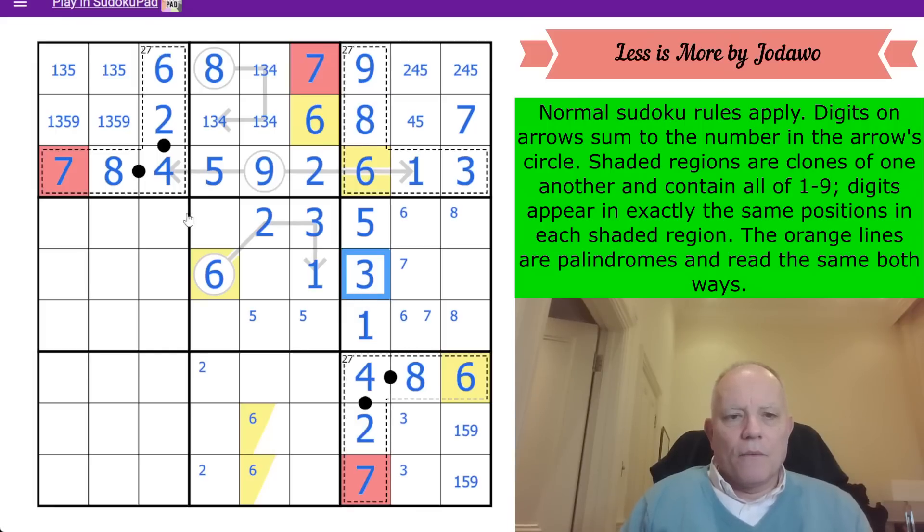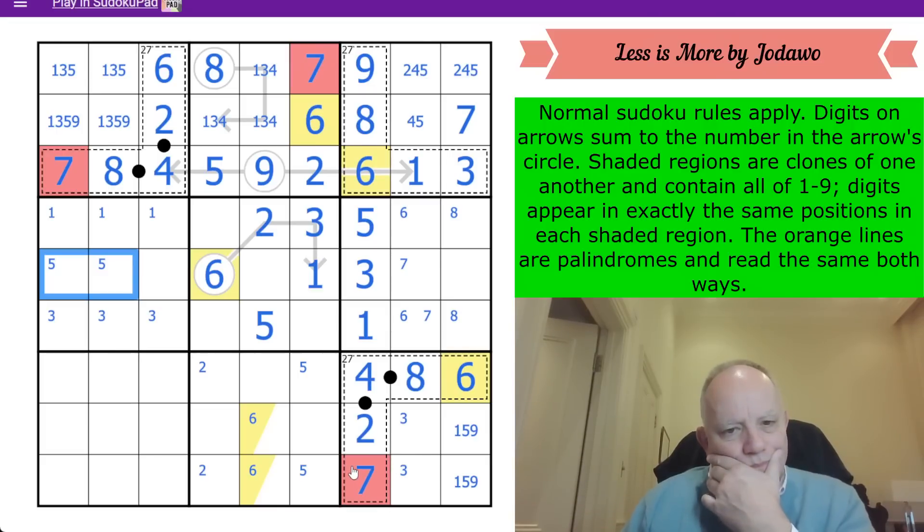We're going to get a 1 in one of those cells. A 3 in one of those. That 5 looks at that cell. So we've placed 5 in box 5. Then we're going to get a 5 somewhere in column 6 there. 5 somewhere in row 5 there.